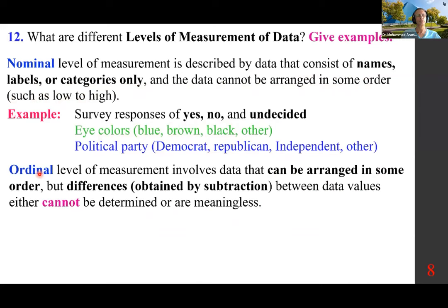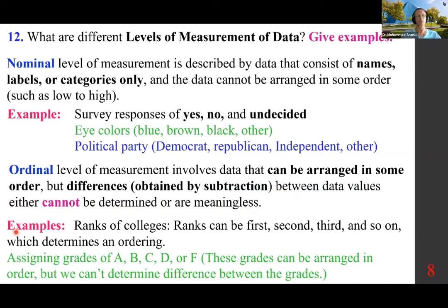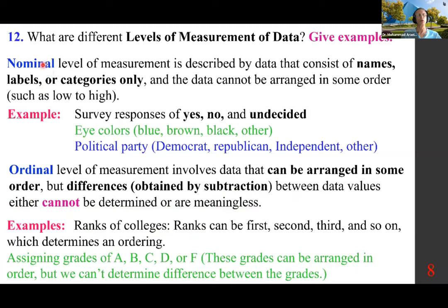Ordinal level of measurement involves data that can be arranged in some order, but differences obtained by subtraction between data values either cannot be determined or are meaningless. Examples: ranks of colleges — first, second, third — which determines an ordering; and assigning grades of A, B, C, D, or F, which can be arranged in order but the difference between grades cannot be meaningfully determined.